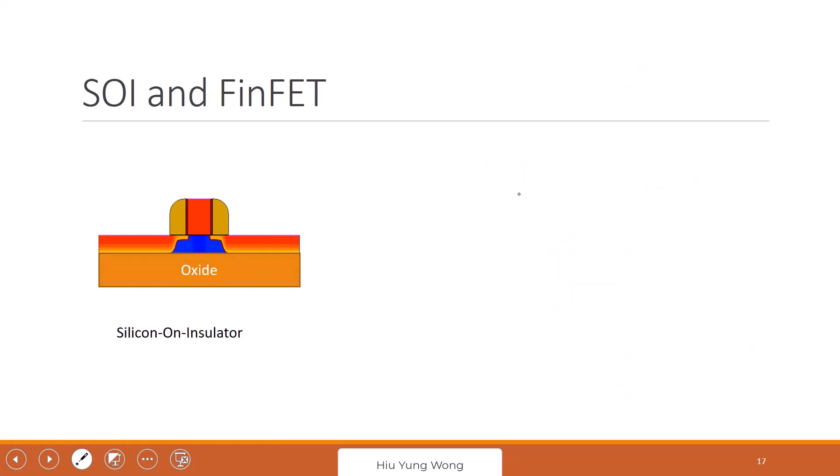We say, how about this? I cut off the leakage by putting the transistor on oxide, on an insulator. Isn't that that will reduce the leakage? So this is the so-called silicon on insulator. Many of you, if you go to the industry, you will see this. Global Foundry is very good in silicon on insulator.